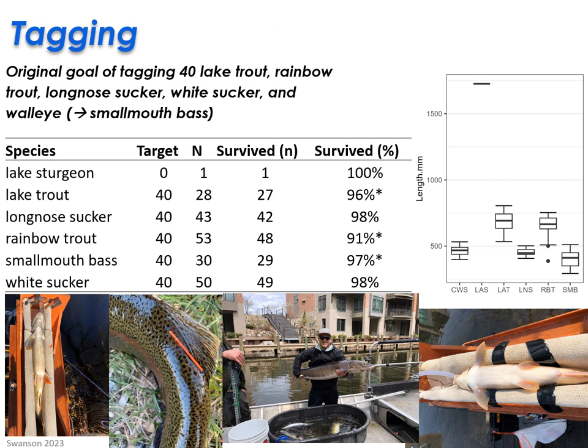In order to accomplish these goals, we first had to tag some fish. This work was slated to start in 2020, which resulted in some logistical hiccups. We had an original target goal of tagging 40 lake trout, rainbow trout, long-nosed sucker, white sucker, and walleye. We switched walleye to smallmouth bass due to unforeseen staffing limitations in spring 2021, as we were unable to capture walleye for tagging. Smallmouth bass were identified as a logistically feasible alternative since they generally come into the river later in the year. Despite this change, we still failed to hit our target numbers for lake trout and smallmouth bass, with only about 30 individuals tagged for each species.